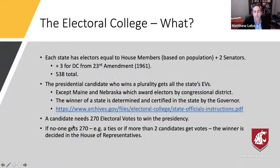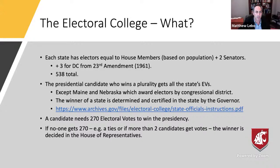Let's talk about what the Electoral College is. Each state has the number of electors equal to the number of members they have in the House of Representatives, plus the number of senators — that's two senators each. The District of Columbia gets three electors due to the 23rd Amendment passed in 1961. That gives us a total of 538 electoral votes, so you need 270 electoral votes to win the presidency. The presidential candidate who wins the plurality in a state wins all of the state's electoral votes — you don't have to have a majority, you just have to have more than anybody else.